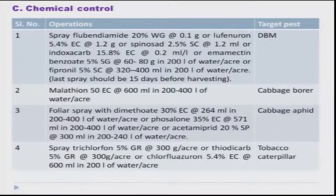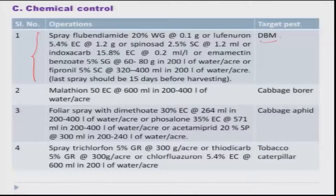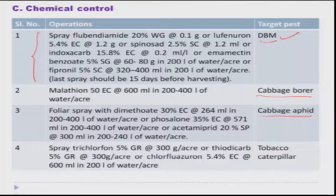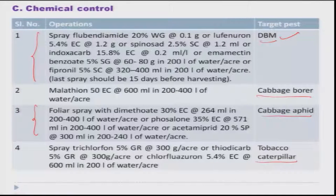Several chemicals have also been recommended based on the economic threshold level. We can use chemical pesticides for managing DBM, cabbage borer, and for sucking pests like cabbage aphid — systemic insecticides are preferred. For tobacco caterpillars, some specific chemicals are also recommended.